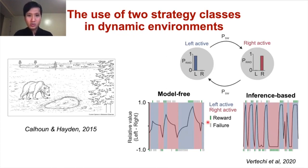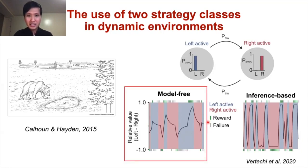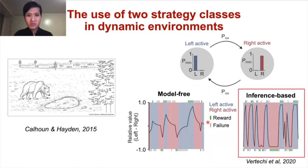In uncertain environments, previous studies have shown that rewards are used in two very different types of strategy. One of them is model-free behavior, where agents incrementally update action values from trial to trial based on feedback signals. In contrast, inference-based agents have an internal model of the world and can adapt more quickly to state changes by inverting this model.